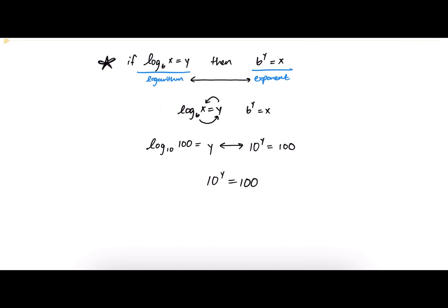10 raised to what power gives us 100? Well, we know that 10 times 10 equals 100, so 10 times itself 2 times gives us 100. So we know that 10 raised to the power of 2 gives us 100.